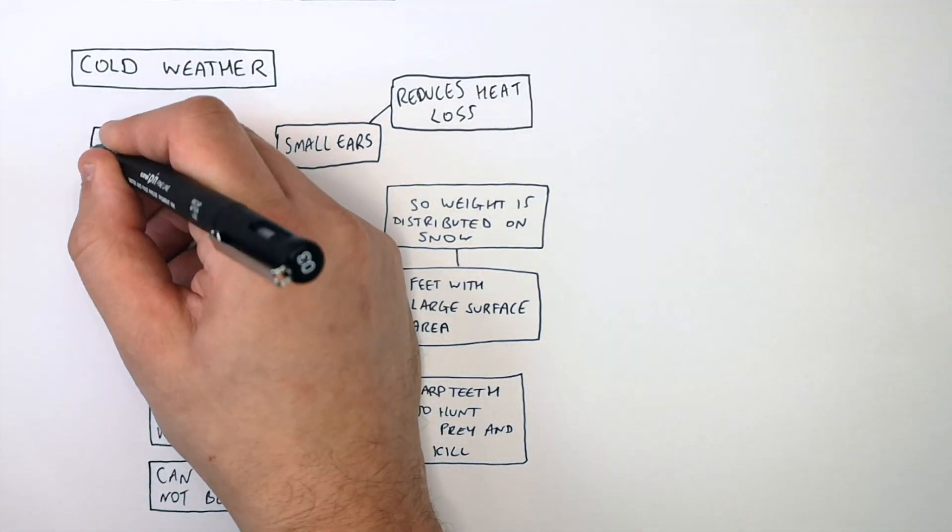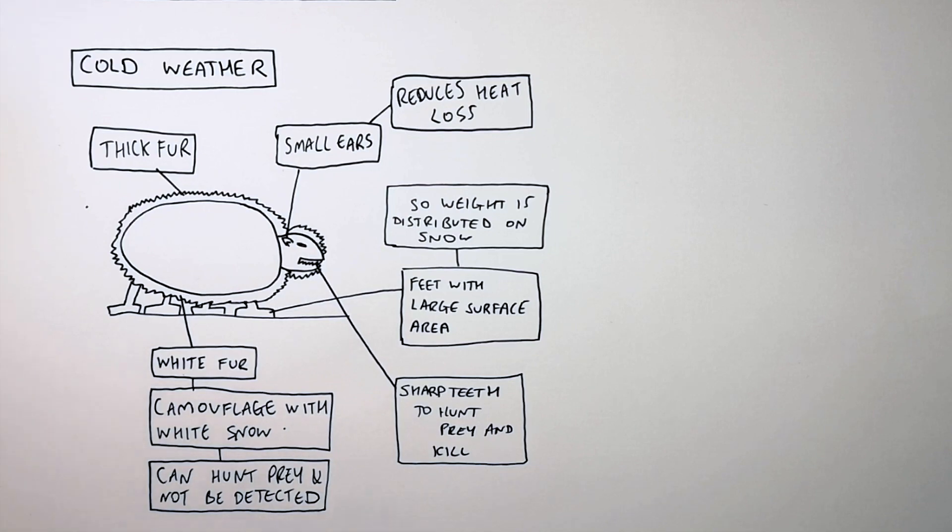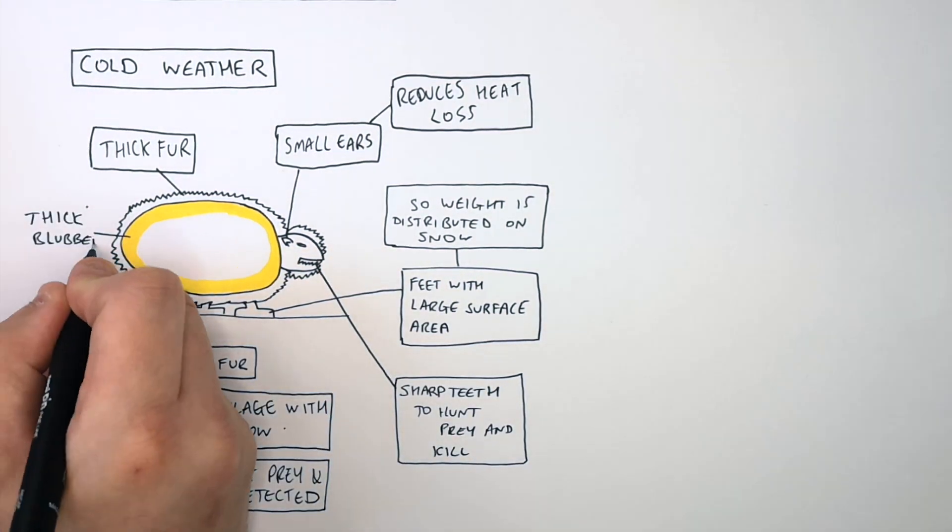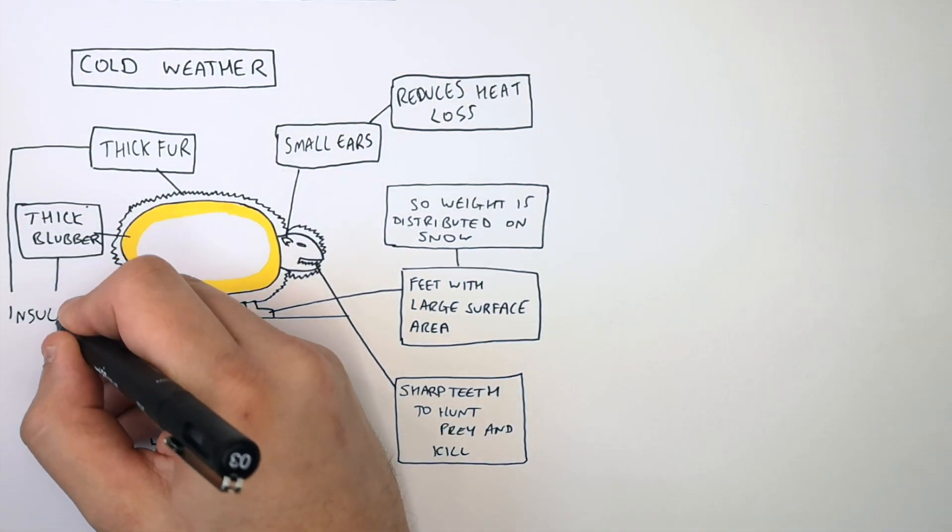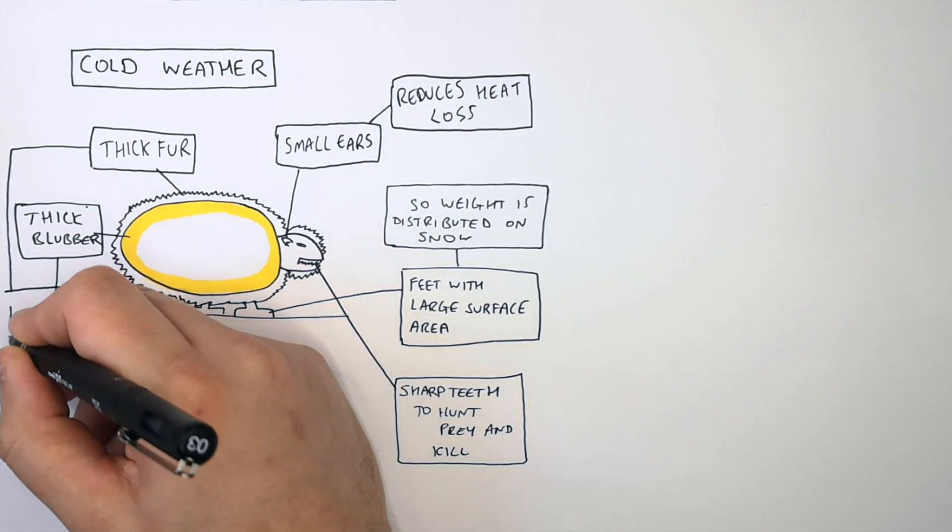Polar bears have thick fur to insulate them from the cold. This will increase their core body temperature. Polar bears have very thick blubber to insulate them from the cold and increase their core body temperature.